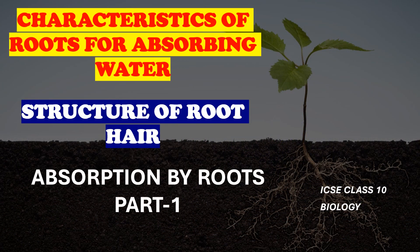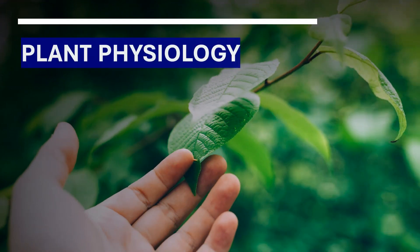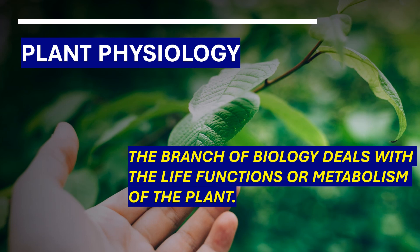Good morning everyone. Today we are discussing characteristics of roots for absorbing water and the structure of root hair. Plant physiology is the branch of biology that deals with the life functions or metabolism of the plant. In 10th standard, there are four chapters under plant physiology: absorption by roots, transpiration, photosynthesis, and chemical coordination in plants. Now we will learn absorption by roots.